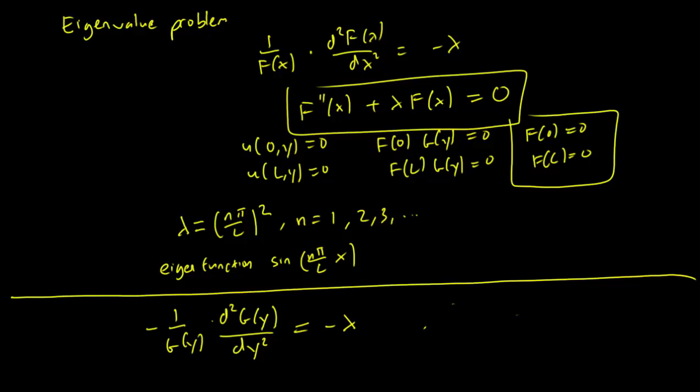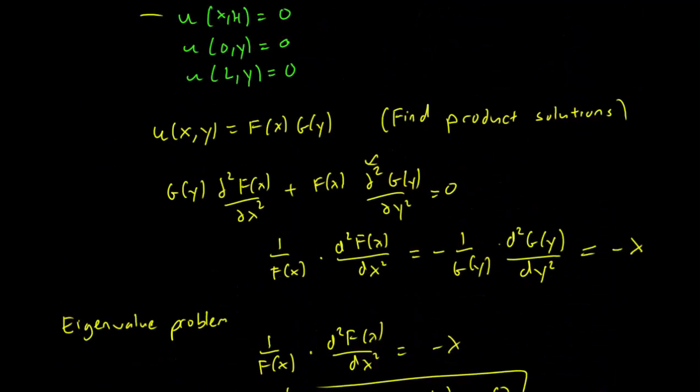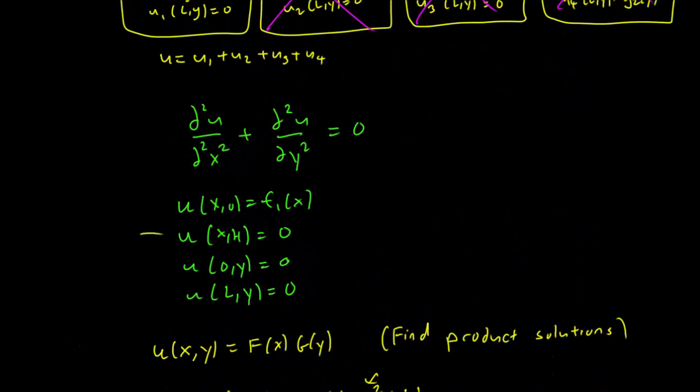So let's look at our equation for g. We have minus 1 over g times second derivative of g equals minus lambda. We have to use our second initial condition.